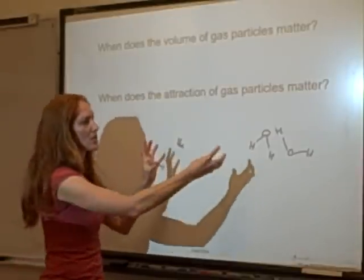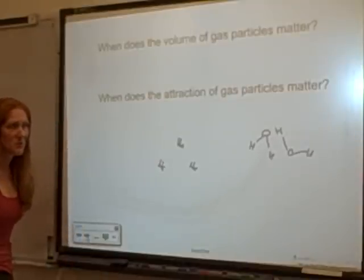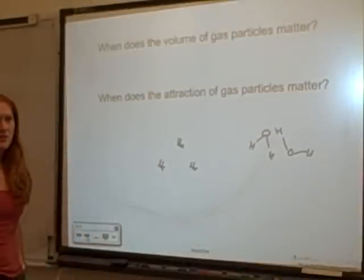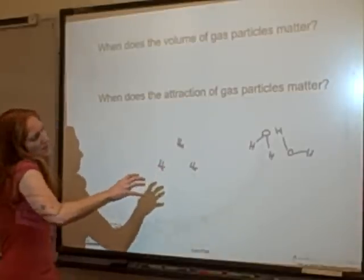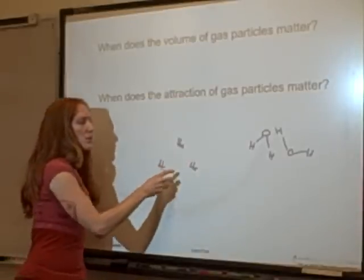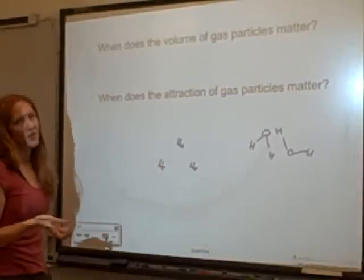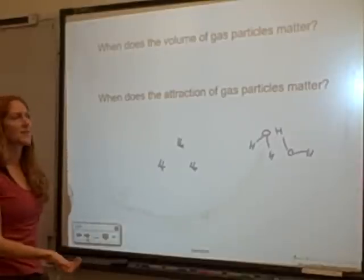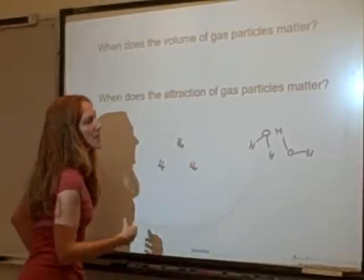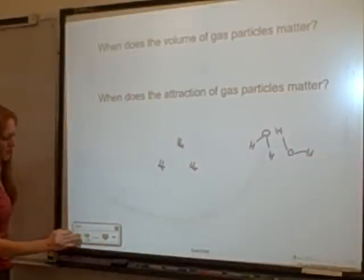The attraction between gas particles also depends on the type of gas. Helium is nonpolar, so it has very little attraction between atoms. Water is a polar molecule with positive and negative regions, so water molecules are much more attracted to each other and will clump up more. Large molecules also tend to have more attraction than small ones.